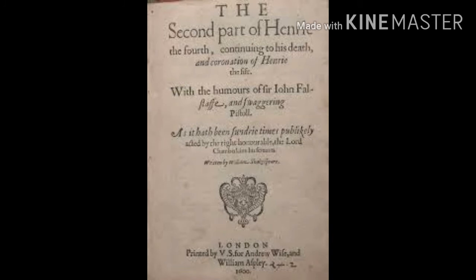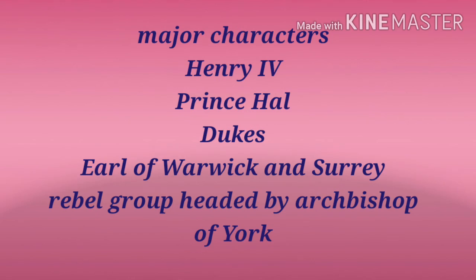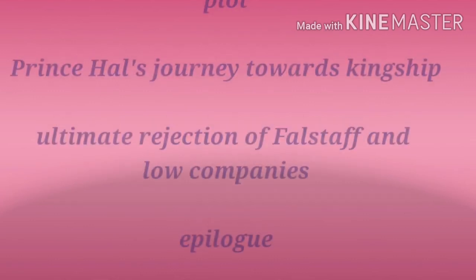The third play in the tetralogy is Henry IV Part 2, considered to be written between 1596 and 1599. Major characters include King Henry IV, Prince Henry, the Duke of Lancaster, the Duke of Gloucester, the Earl of Warwick, the Earl of Surrey, and a rebel group led by the Archbishop of York and the Earl of Northumberland. Other characters are Fang, Snare, Silence, Master Shallow, and of course Sir John Falstaff, who is a major character in this play too.